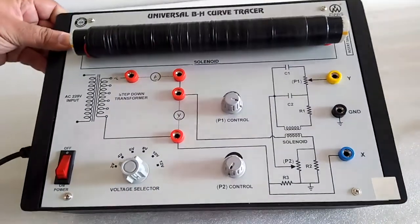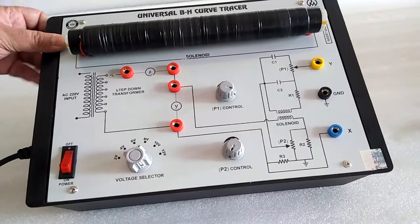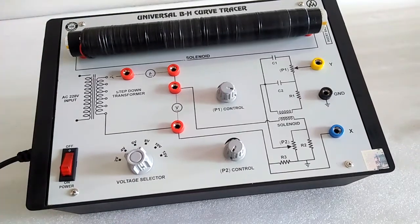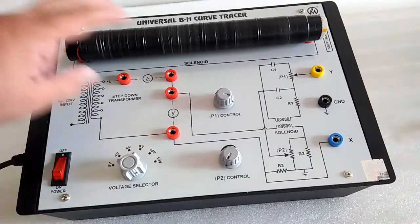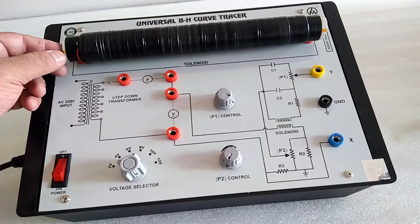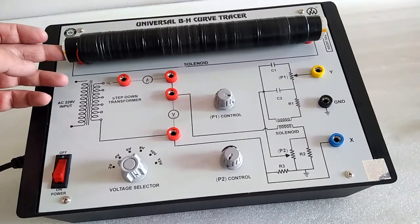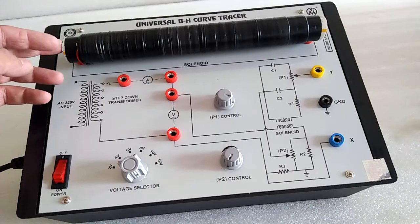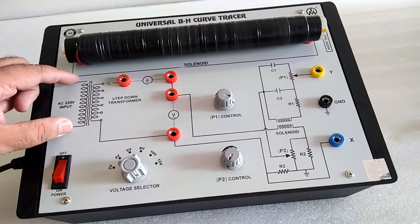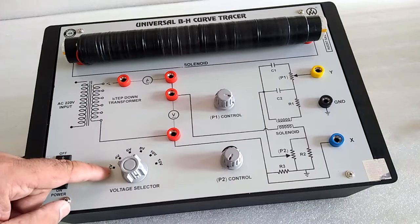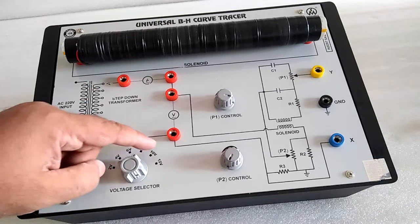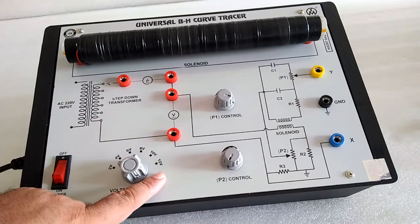Here is the universal BH curve tracer. In this kit we have a solenoid. You can use different samples to see the BH curve of that. Here are the AC inputs, step-down transformer with different types: 2V, 4V, 6V, 8V, 10V, and 12V AC.